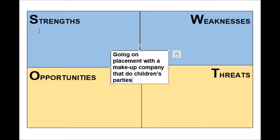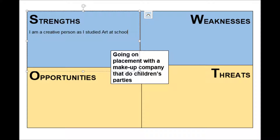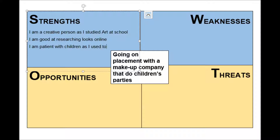The first thing we need to think about are your strengths — what skills you already bring to the subject in the middle. This student is already a creative person because they've studied art at school, which is going to be really helpful for the placement. They're also really good at researching looks online, which is a real strength for coming up with new face paint designs. They say they're a patient person because they've done babysitting in the past, so they're used to children, who will obviously be their main clients.